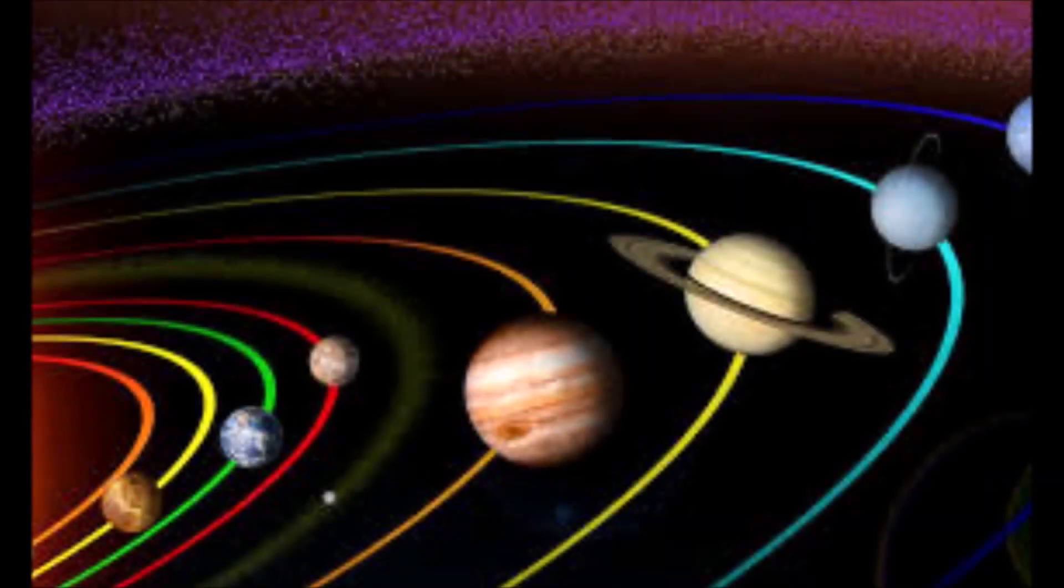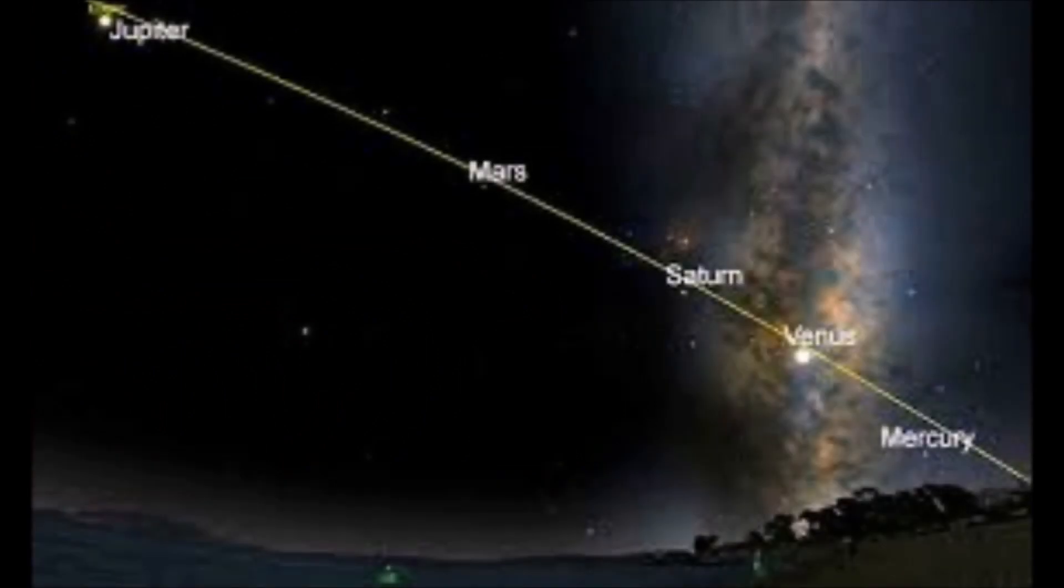Mercury and Venus are low to the west with bright Jupiter shining just above. Higher up in the northwestern sky is Saturn and completing the set of five is the red planet Mars high overhead.